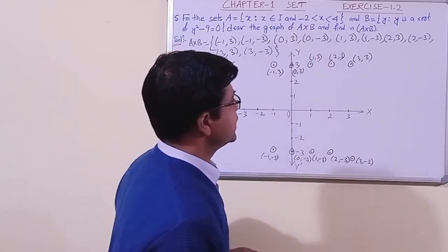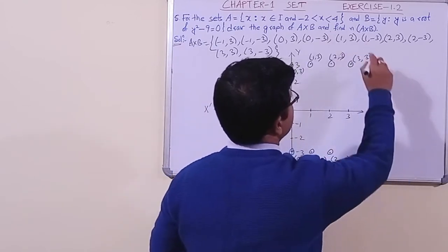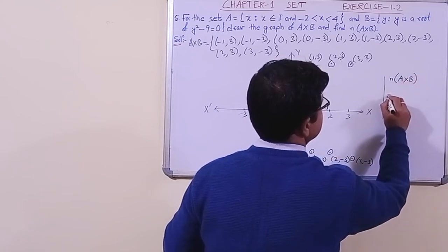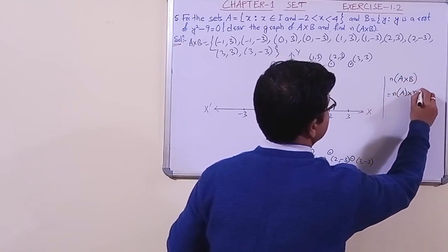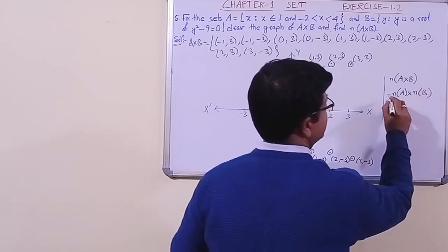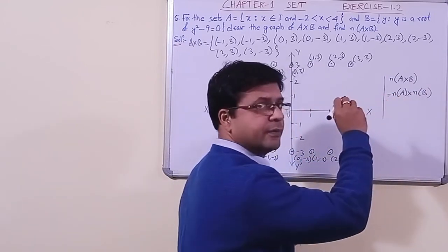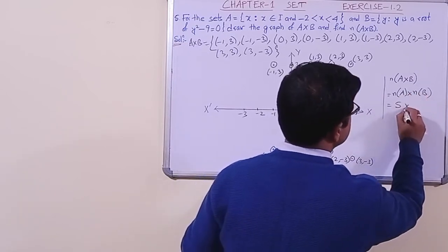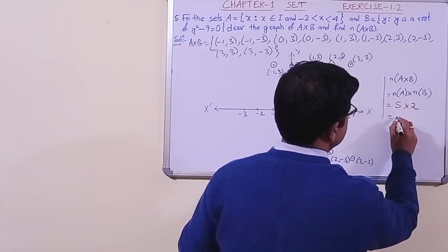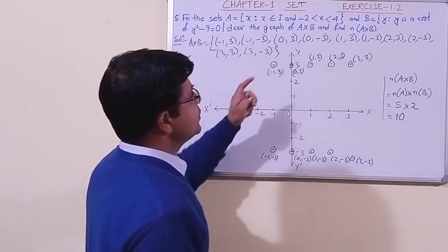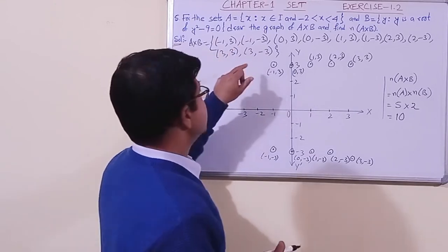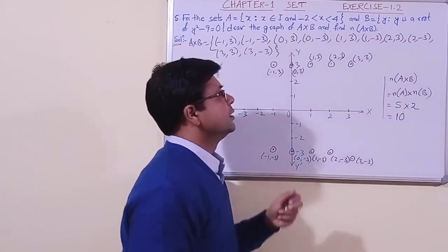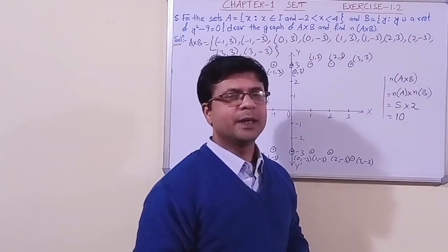Now the last part: find n, the cardinal number of A cross B. This equals n of A multiplied by n of B. The number of elements in set A is 5, and in set B is 2, so 5 into 2 gives n of A cross B equal to 10. If you count the plotted points you also get 10: one, two, three, four, five, six, seven, eight, nine, ten. I hope all of you understood the solution.